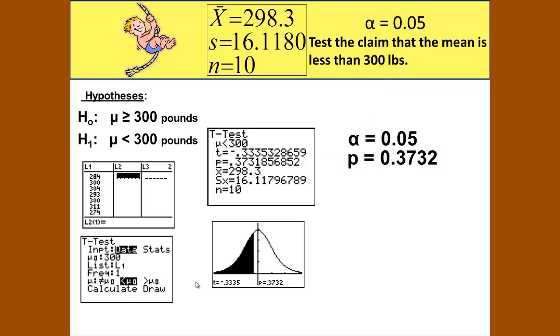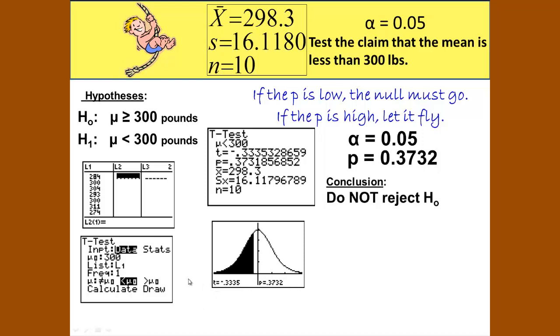Our p-value is greater than our alpha. Remember, if the p is low, the null must go. If the p is high, we let it fly. A low or less—if the p is low or less than the alpha, that is unusual and we reject the null. If the p is high or greater than the alpha, it is not unusual. Our p is high, so it is not unusual. Therefore, we do not reject H₀ or the null.